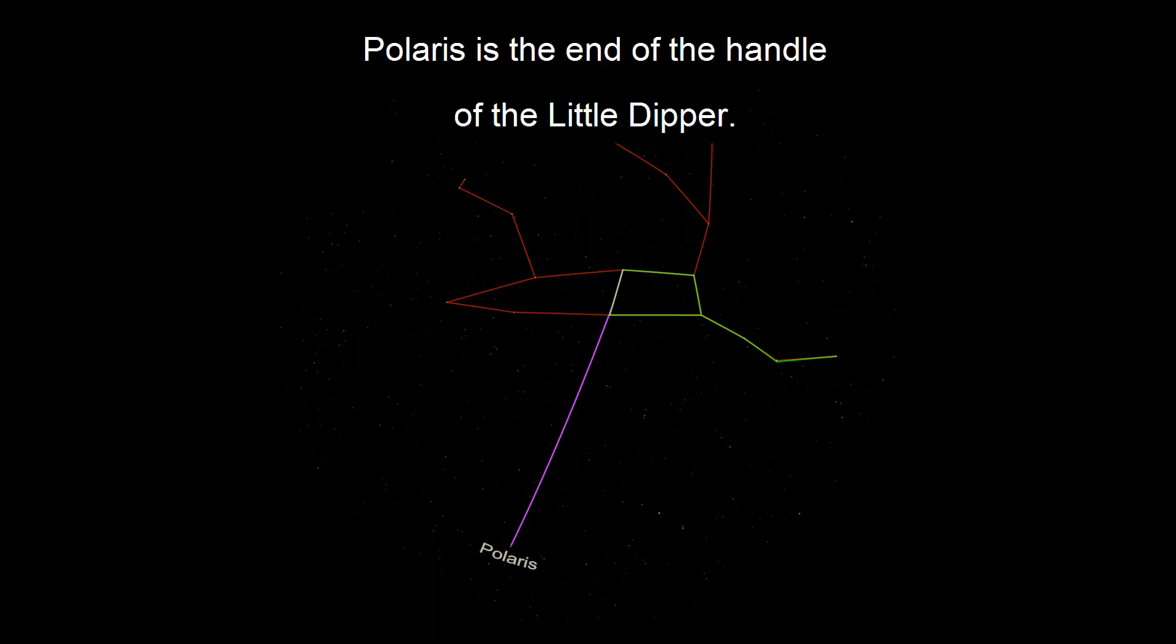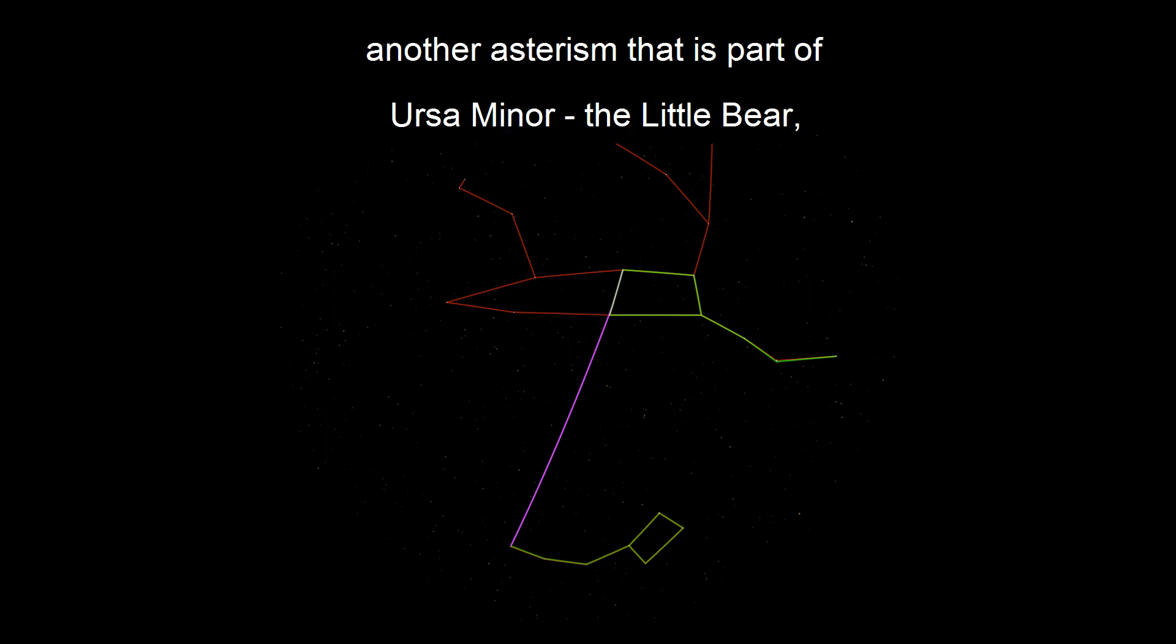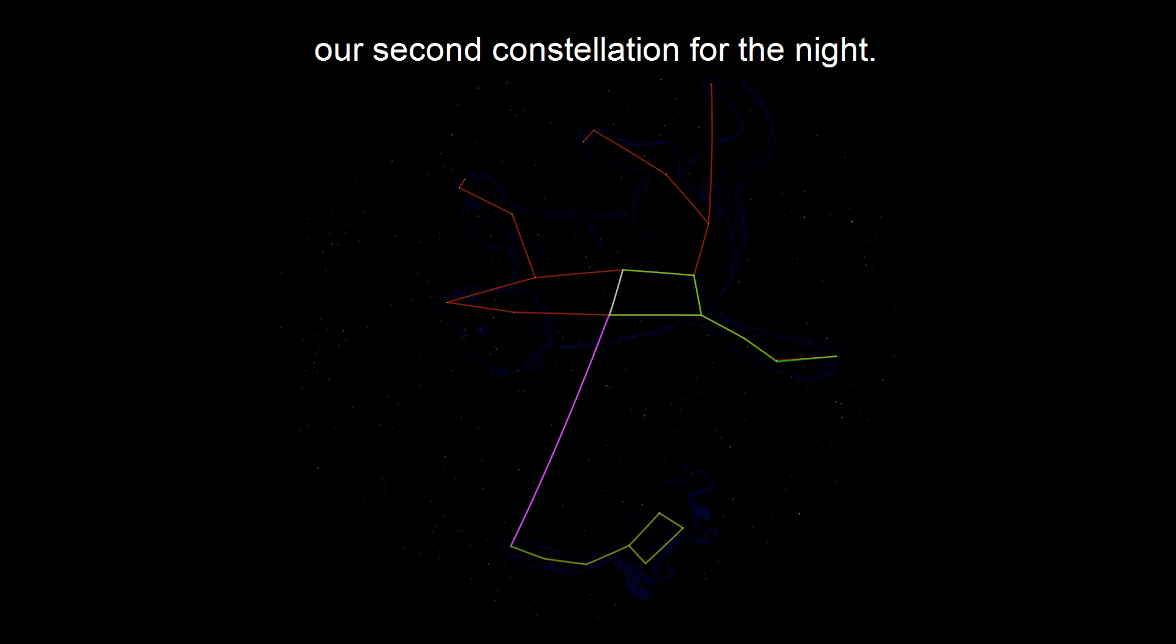Polaris is the end of the handle of the Little Dipper. Similar to the Big Dipper in Ursa Major, the Little Dipper is not a constellation, but another asterism that is part of Ursa Minor, the Little Bear, our second constellation for the night.